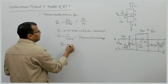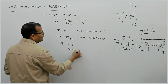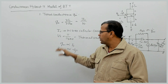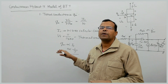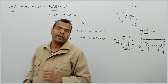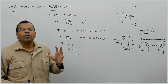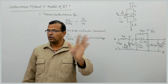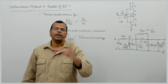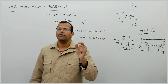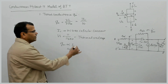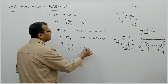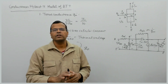Gm is directly proportional to collector current and inversely proportional to temperature. So transconductance Gm reduces with increase in temperature and increases with increase in collector current. This is important. This topic is purely from engineering services examination — it is not for GATE. There can be a question on it: transconductance increases with collector current and decreases with temperature.